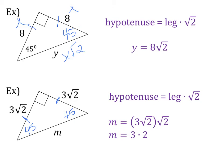Now we know if we have the square root of 2 times the square root of 2, that square root part cancels out, and we just have 3 times 2, which gives us our final answer of m equals 6.